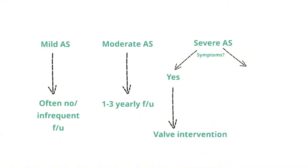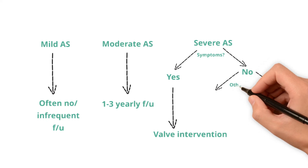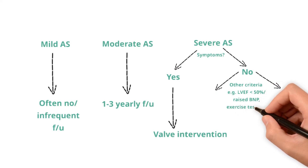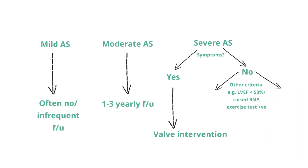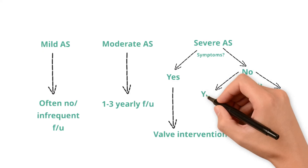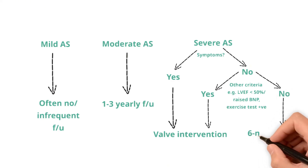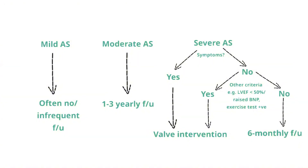If patients with severe AS do not have symptoms, the decision depends on other criteria, such as impaired LV systolic function, raised brain natriuretic peptide levels, or a positive exercise test — meaning development of symptoms or a drop in blood pressure during supervised treadmill exercise — as these indicate the heart is starting to decompensate. If any of these are present, valve intervention is recommended; if not, regular follow-up at least six-monthly with repeat echocardiography is required. Patients need to be aware of symptoms to look out for, as untreated severe symptomatic aortic stenosis has around a 50% mortality at two years.